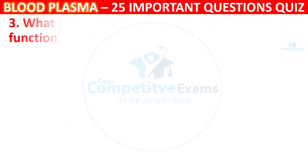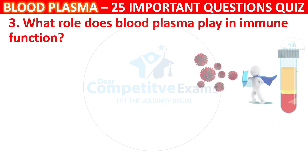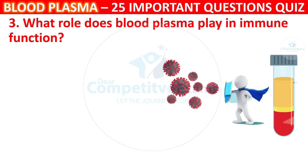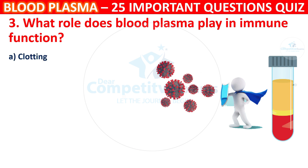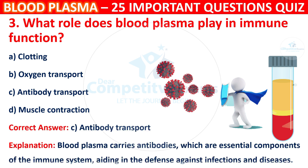Question 3: What role does Blood Plasma play in immune function? Your options are Clotting, Oxygen Transport, Antibody Transport, or Muscle Contraction. The correct answer is C, i.e. Antibody Transport. Blood Plasma carries antibodies, which are essential components of the immune system, aiding in the defense against infection and diseases.